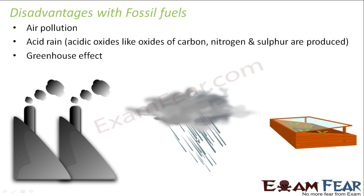The third disadvantage is the greenhouse effect. Greenhouse gases like carbon dioxide and methane trap energy from sunlight within the atmosphere. The more greenhouse gases present, the more heat is trapped and the hotter the atmosphere becomes. Burning fossil fuels produces these greenhouse gases, increasing their amount in the atmosphere and causing global warming.